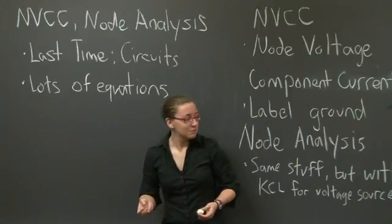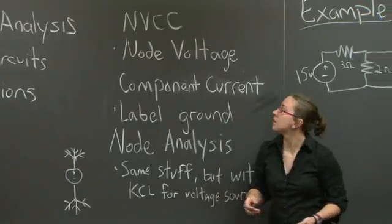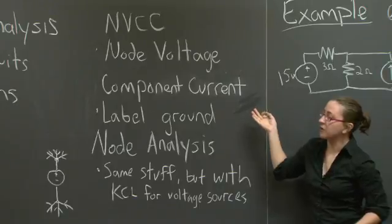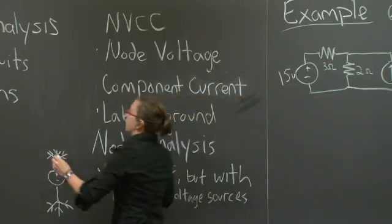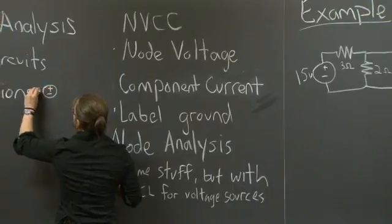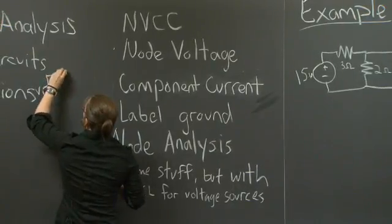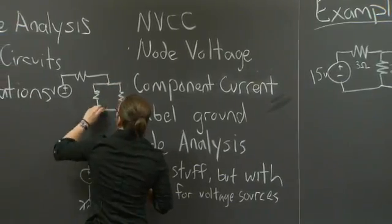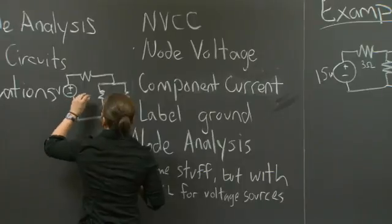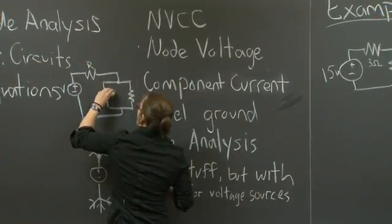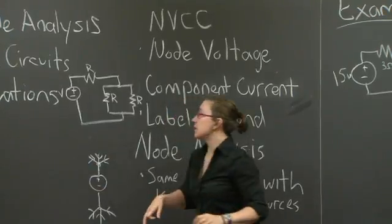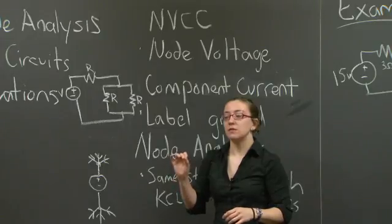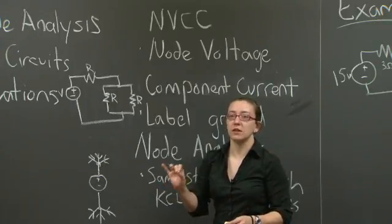Let's take a look at NVCC. As I said before, NVCC stands for node voltage component current. And what that means is, if you have a very simple circuit, let's say just a voltage source and a couple resistors. Previously, with KVL, we were interested in the voltage drop around a loop being equivalent to zero. In this case, we're actually going to look at the voltage drop, or the voltages associated with particular nodes.